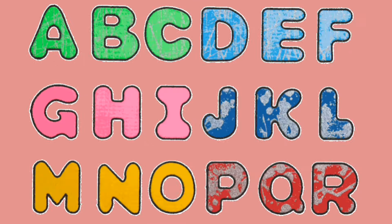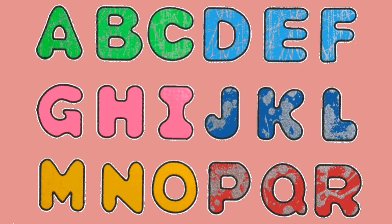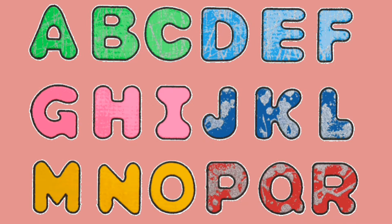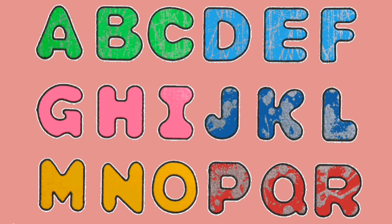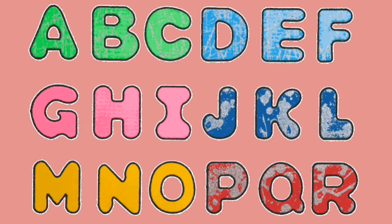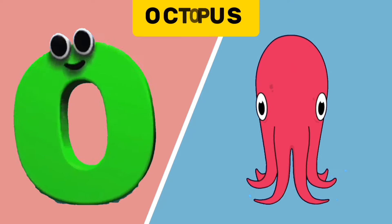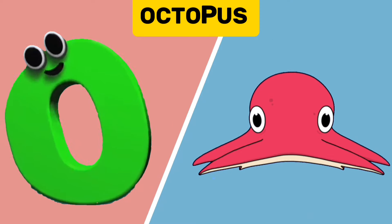N, N. It's the letters of the alphabet. O is for Octopus.